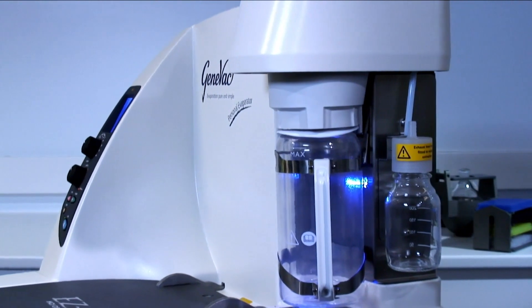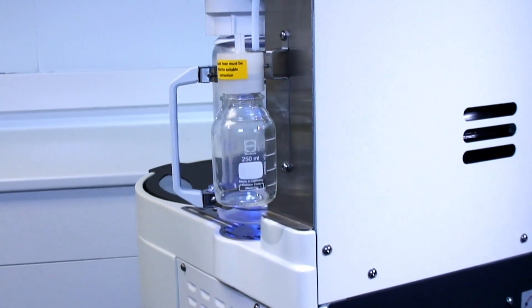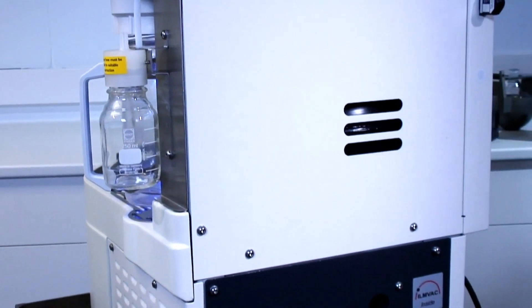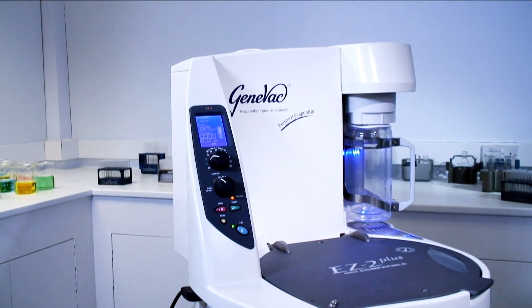The EZ2 will accept anything from two 500ml round-bottomed flasks to eight shallow well microtiter plates. The EZ2 is a compact integrated evaporation system.